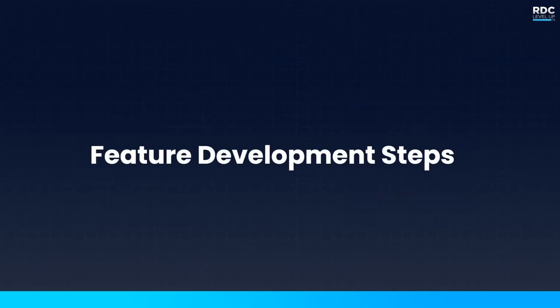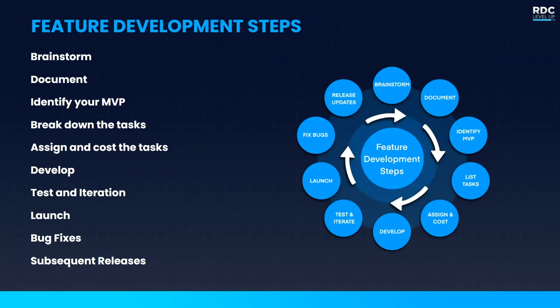This is not a hard rule for every team, and I've seen a lot of variations. Some may argue you could combine some of these steps. For this talk, I wanted to break them down into as small steps as possible to explain the significance of each. Here are the steps I generally identify: first, brainstorming the major expansion; then documenting it with your team; through that documentation, identifying your minimum viable product; listing out all tasks needed; costing and estimating how long those will take; then development; followed by testing and iteration; and finally launch with bug fixes and subsequent updates.